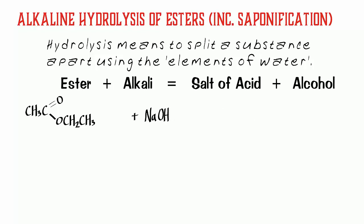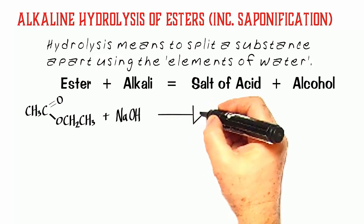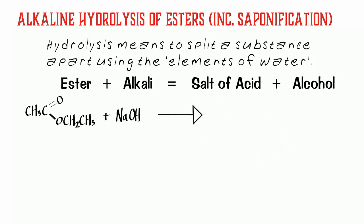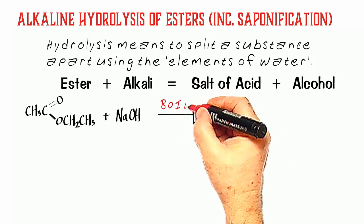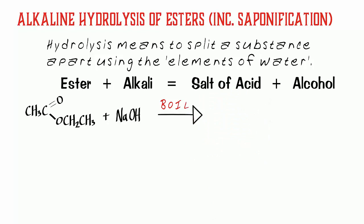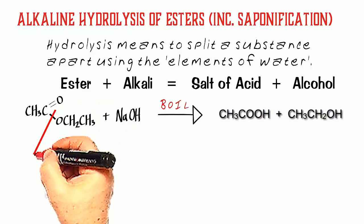Let's take a look at the simplest case. I've taken the simple ester here, ethyl ethanoate, and I'm going to react it with sodium hydroxide. When heated together we get hydrolysis taking place first, and that will give us two products: ethanoic acid and ethanol. It essentially reverses the process that will have formed the ester from a carboxylic acid and an alcohol.